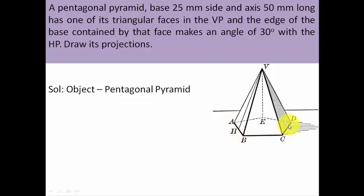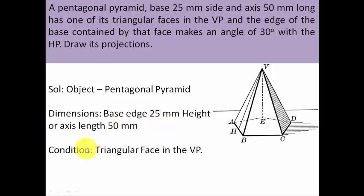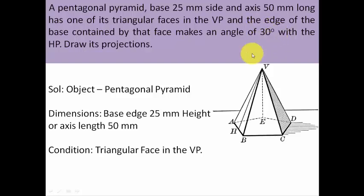We have an object in the form of a pentagonal pyramid — here is the pentagon at the base, a regular pentagon with center somewhere here, and from the center going upward by 50 millimeters you will have point V as the apex. The conditions are: one triangular face is in the VP, and the base edge of that triangular face — let's say face VBC with base edge BC — makes an angle theta of 30 degrees with the HP.